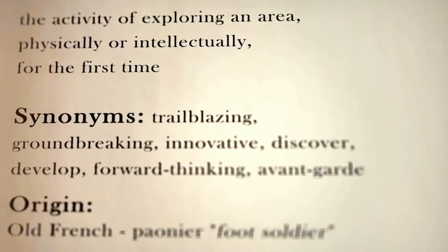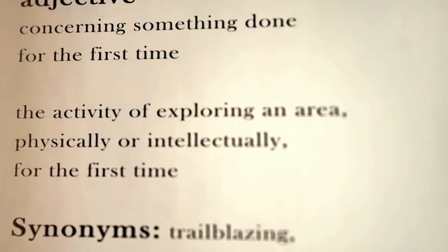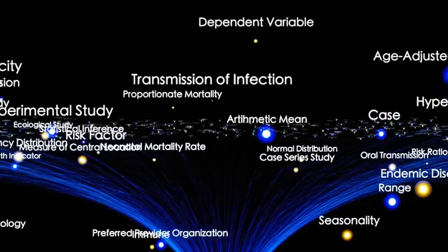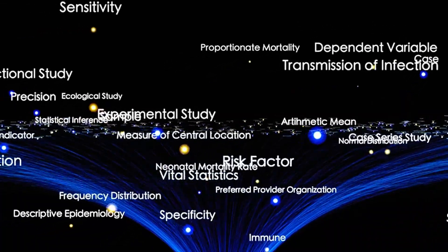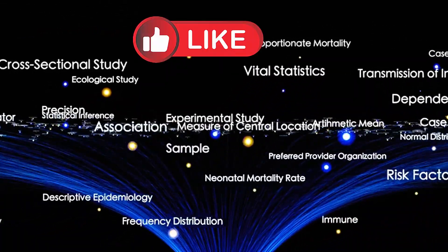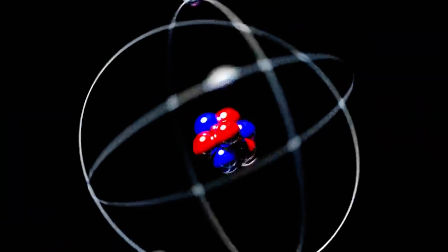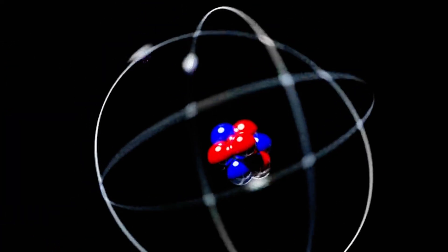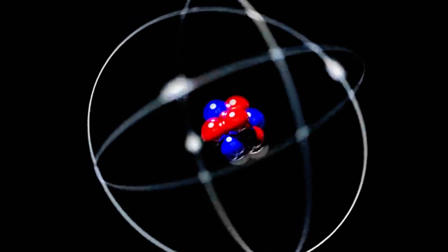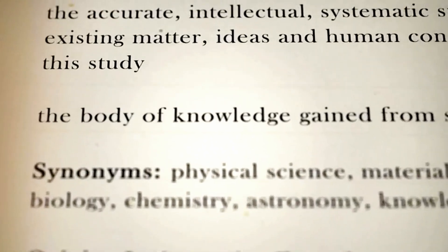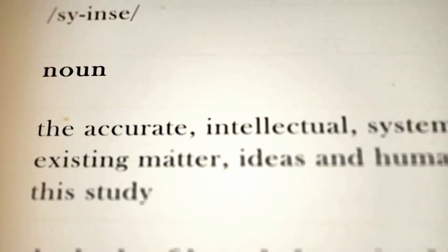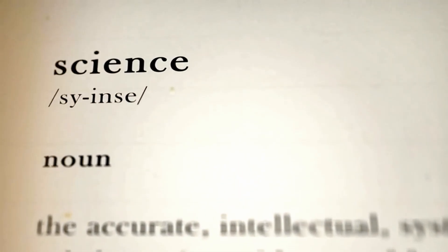And here's the most fascinating part: we still don't know everything. Relativity explains the large-scale universe — stars, galaxies, cosmic expansion. But it clashes with quantum mechanics, which rules the tiny world of atoms and particles. Reconciling these two theories is perhaps the greatest challenge in science today. Somewhere in that puzzle may lie the key to time travel, wormholes, or even parallel universes.